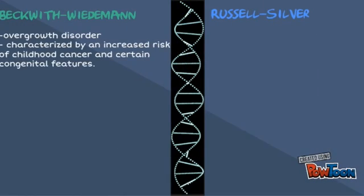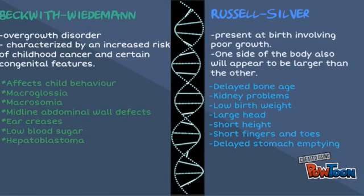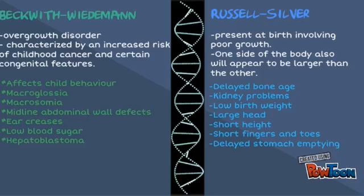Beckwith-Wiedemann syndrome is a syndrome associated with overgrowth. It is characterized by an increased risk of childhood cancer and certain congenital features. Its symptoms include macroglossia, which is a large tongue; macrosomia, which is above-average birth weight and height; midline abdominal wall defects; ear creases or ear pits; low blood sugar; and hepatoblastoma, which is a tumor of the liver.